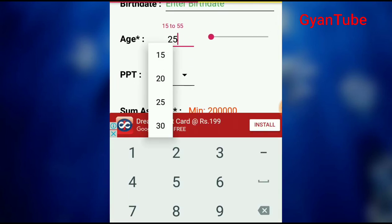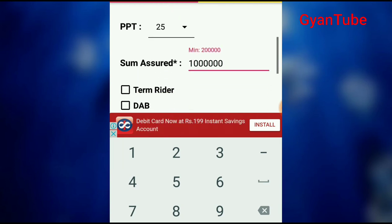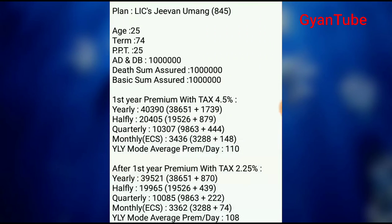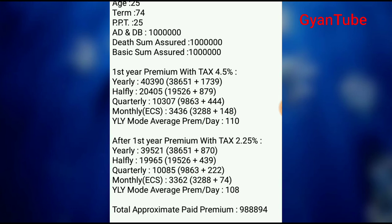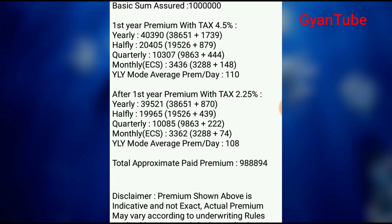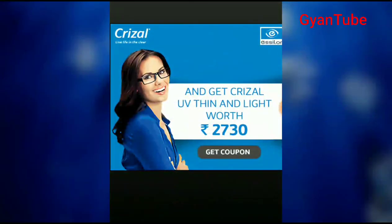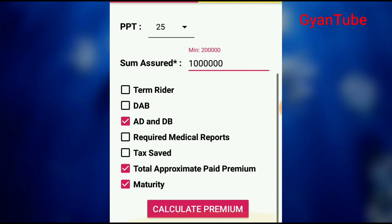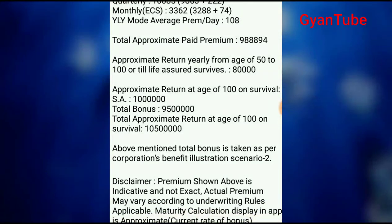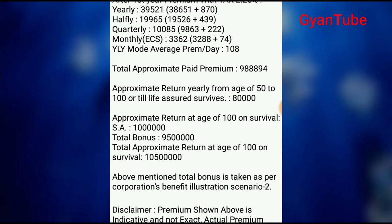Let me show a calculation for this plan. I have selected a 25-year term with Rs. 10 lakhs sum assured. The yearly premium will be approximately Rs. 40,351 in year one and Rs. 49,521 from year two onwards. Total premium paid approximately comes to Rs. 9,88,894. Regarding survival benefit, I will receive 8% of sum assured, i.e., Rs. 80,000 per annum, and this continues for lifetime.